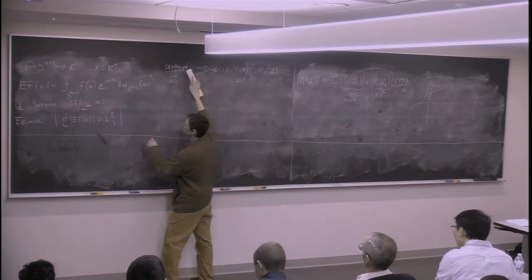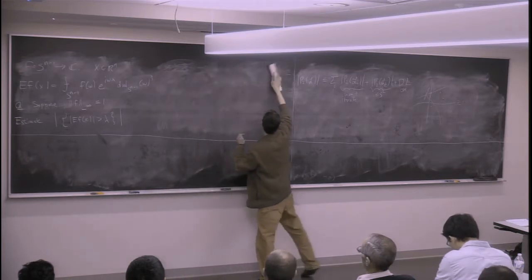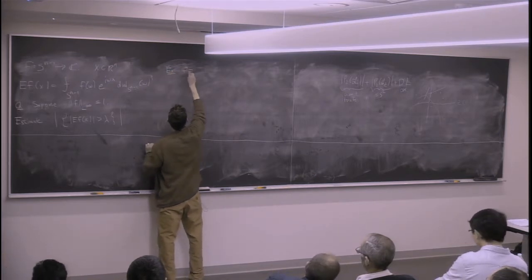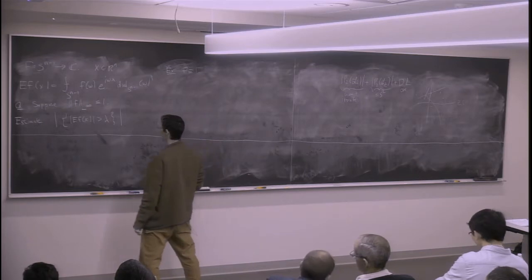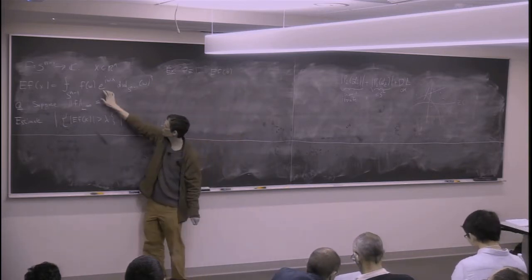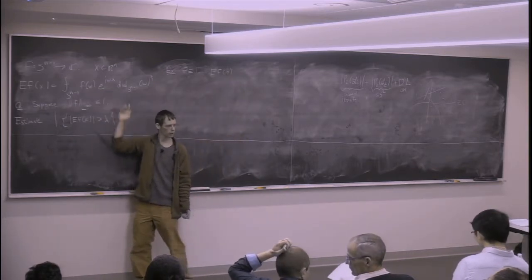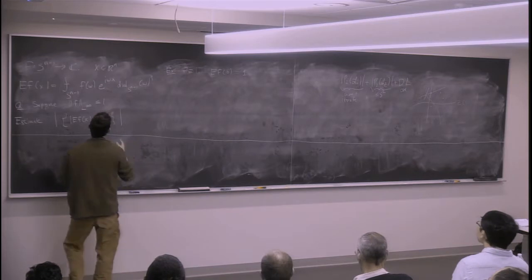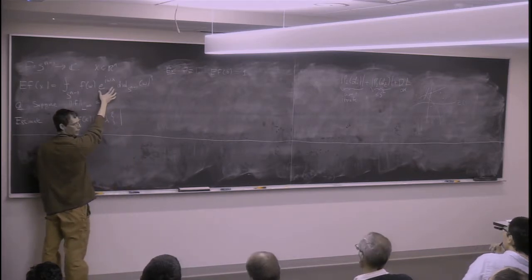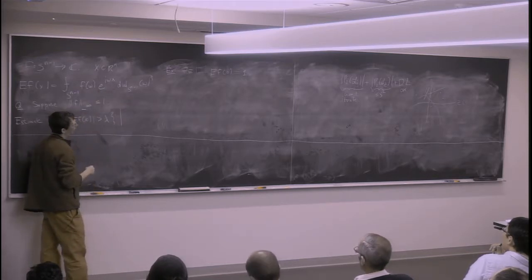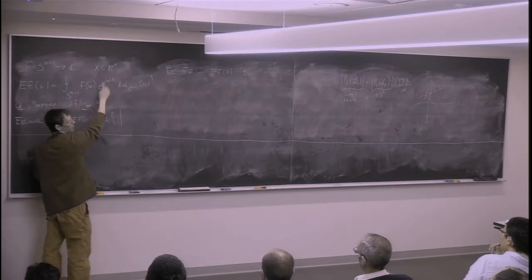The most natural example is f equal to 1. At x = 0, Ef(0) = 1 since we're averaging 1 over the sphere. As x gets larger, the integrand e^{iω·x} oscillates faster and faster, causing more cancellation, so Ef(x) gets smaller. Fourier analysts worked this out more than a century ago — this function is a Bessel function. Its norm satisfies |Ef(x)| ~ ‖x‖^{−(n−1)/2} for large x, and is around 1 for ‖x‖ < 1.